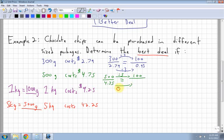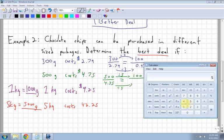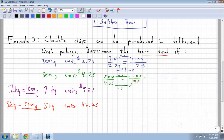I'm also going to divide the bottom by 5. So I take $4.75 divide by 5, so I get 95 cents. 0.95. So far, the first one is still the better deal.